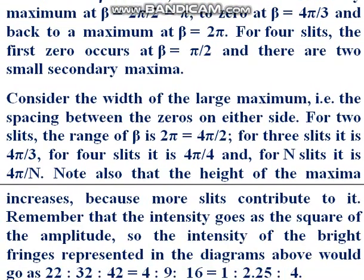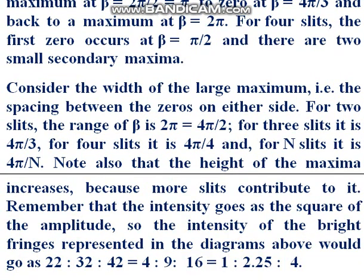If you further increase the number of slits to four, the first zero occurs at beta = π/2, and there are two small secondary maxima. Now consider the width of the large maximum — the spacing between zeros on either side: for two slits the range of beta is 4π/2, for three slits it is 4π/3, for four slits it is 4π/4, and for N slits it is 4π/N.